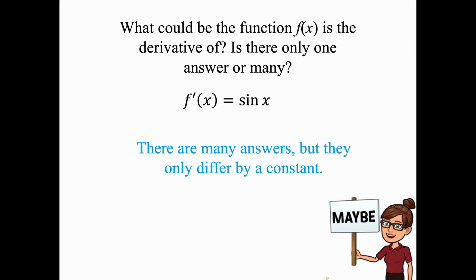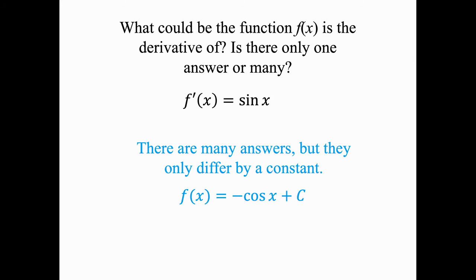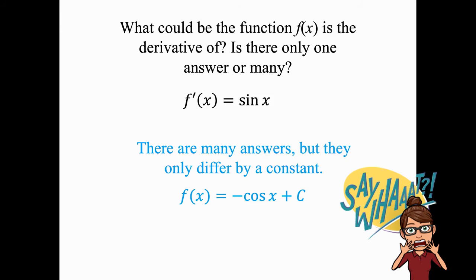Remember the example a few slides ago? So what this means is the f(x) function, where f prime is coming from, would be negative cosine plus c.